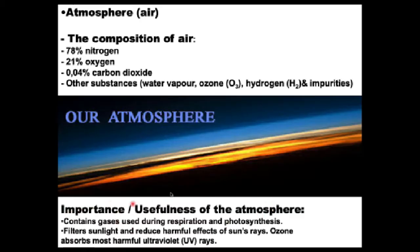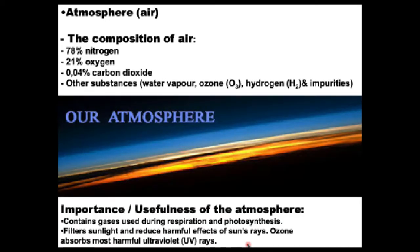The atmosphere contains important gases used during respiration — specifically oxygen. Human beings and animals breathe in oxygen and release carbon dioxide as a waste product. Plants undergo photosynthesis, using that carbon dioxide to produce food and releasing oxygen as a waste product. Processes like respiration and photosynthesis are very important because they allow for the use and recycling of gases.